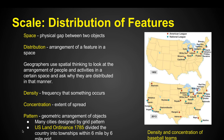Scale is also considered in the distribution of features. We talk about space — and we're not talking about outer space — we're talking about an area we're looking at. Space is the physical gap between two objects. Distribution is the arrangement of a feature in a space. Geographers use spatial thinking to look at the arrangement of people and activities in a certain space and ask why they are distributed in that manner. Density is the frequency that something occurs. Concentration is the extent or the spread. And then we have the pattern — the geometric arrangement of objects.